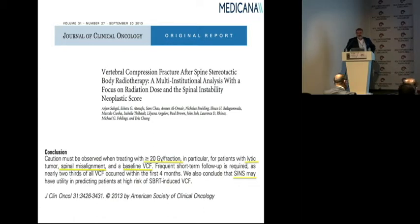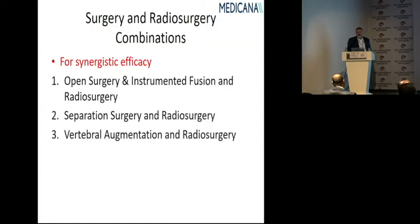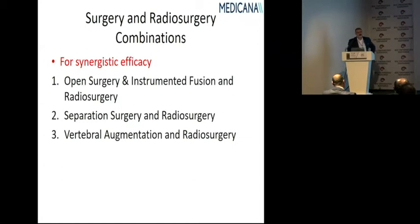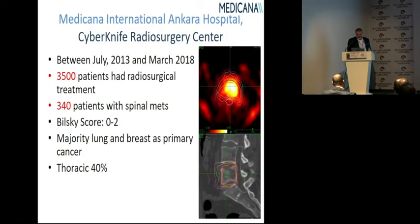Prognostic factors for vertebral compression fracture include: doses greater than 20 Gy, lytic lesions prior to treatment, spinal malalignment, and baseline vertebral compression fracture. Radiosurgery can also be combined with other modalities — open surgery with instrumented fusion followed by radiosurgery. Separation surgery is another term, where the goal is to remove tumor close to the spinal cord so that better doses can be delivered to the tumor while preserving the cord. Vertebral augmentation combined with radiosurgery is another option.